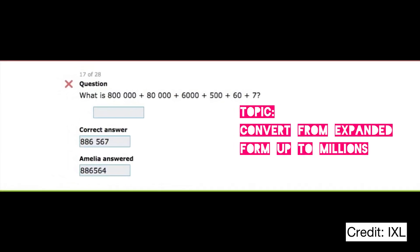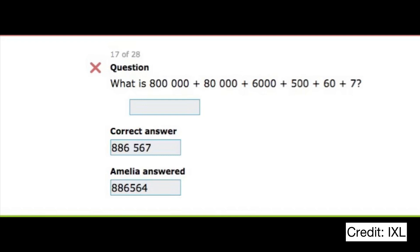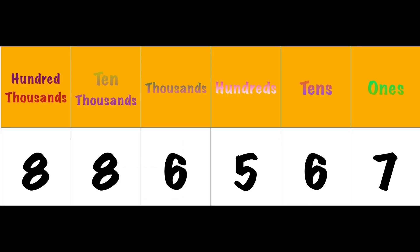I practised converting numbers from their expanded form up to millions. In this question, the seven is in the ones place, the six is in the tens place, the five is in the hundreds place.